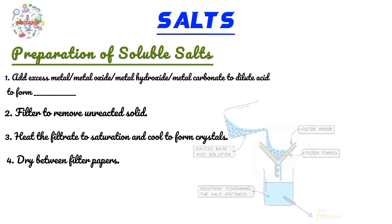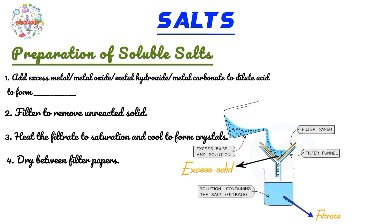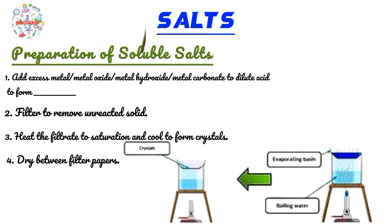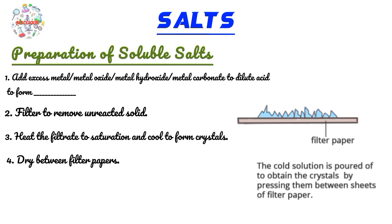The next step is to filter to remove the unreacted solid — the residue. The filtrate is what will contain the salt you're after. Heat the filtrate to saturation and then cool in order to form crystals. In most questions, they ask you how to obtain the crystals of a certain salt, so you don't want to heat the filtrate to full evaporation, as this will cause it to lose the water of crystallization and therefore crystals will not be formed. Heat it to saturation and then cool to form crystals.